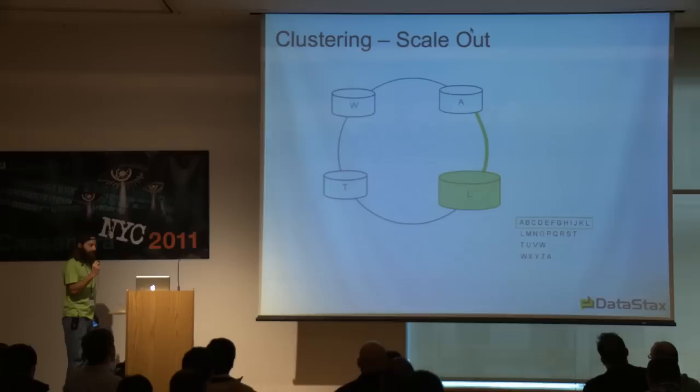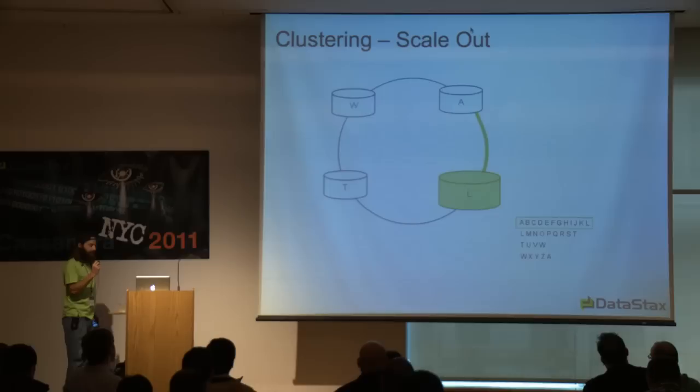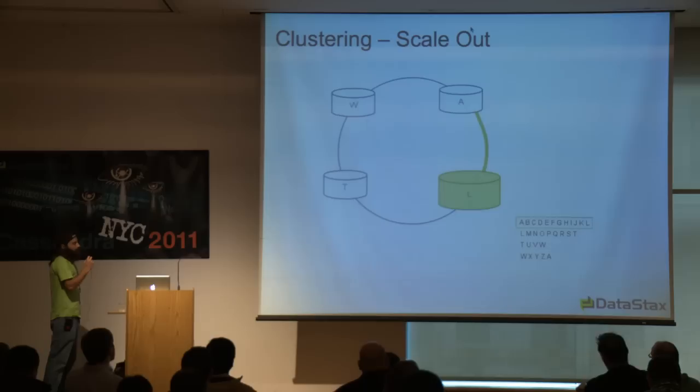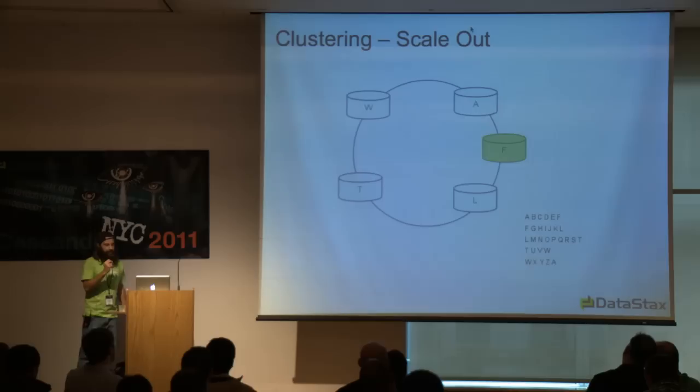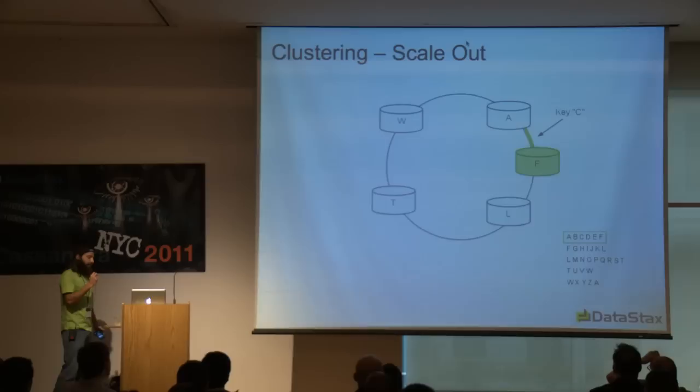For scale-out: node L has ended up owning more of the token space than it should and become a hot spot. To add another node and take some load off L, you just toss it in there. Node F now takes over the range between A and L — the key C is now owned by node F. It's taken over that range and it's pretty straightforward.